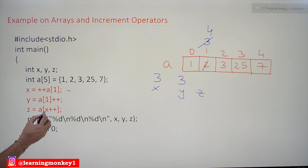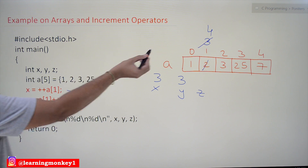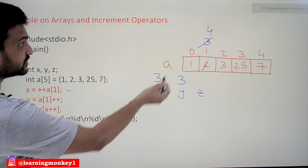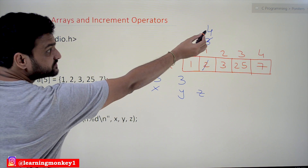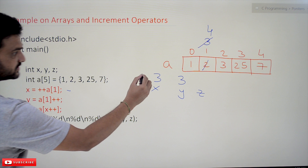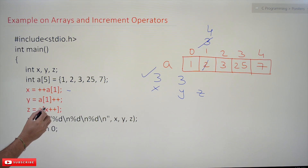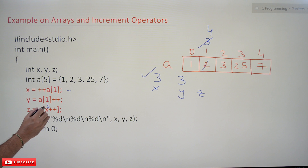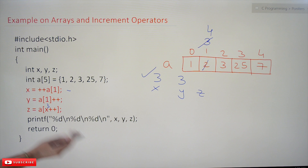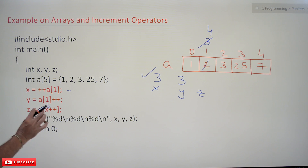Now this is one more step where we will get confused. z = a[x++]. The value of x is 3. Because it is post-increment, we first use x as 3, so we access a[3], and then x will get incremented. We are going to use a[3] — its value is 25.